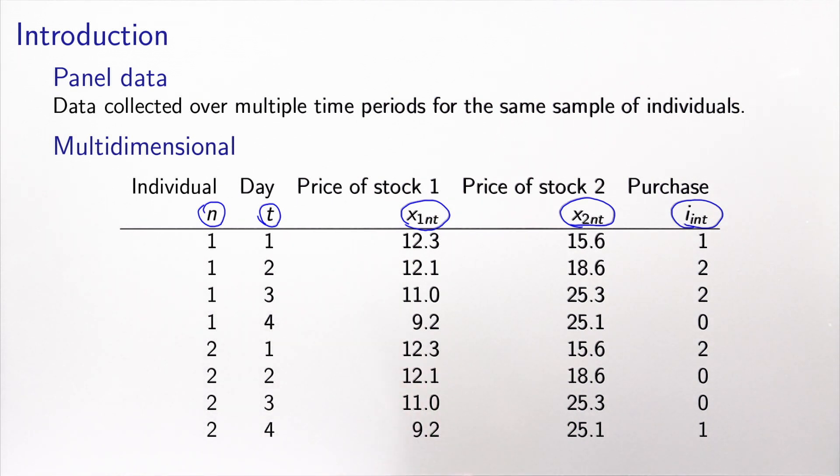This example refers to choices related to stocks in a portfolio management. At each day, each individual is faced with the price of two stocks and may decide to buy stock one, stock two, or none at all. This is the decision represented here. One means I purchase stock one, two means I purchase stock two, and zero means I don't purchase any of the stocks.